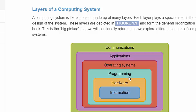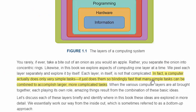Then we'll move out chapter by chapter, covering each of these layers throughout the semester. One of my favorite sentences in this section says that each layer in itself is not complicated. In fact, a computer actually does only very simple tasks — as simple as 1 plus 1, or 1 plus 0. It just does them so blindingly fast that many simple tasks can be combined to accomplish much larger and more complicated tasks.